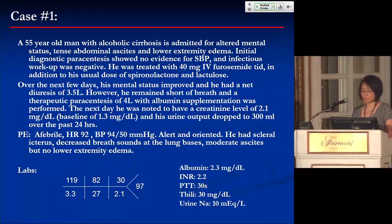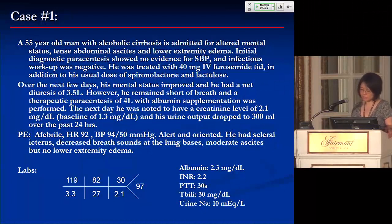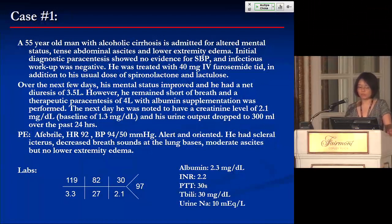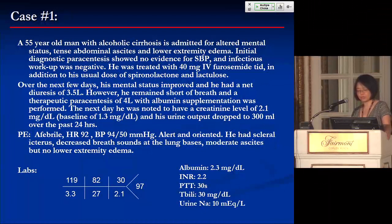He's alert and oriented, has scleral icterus, and decreased breath sounds at the lung bases, and moderate ascites but no lower extremity edema. Labs show sodium of 119, potassium of 3.3, chloride of 82, bicarb of 27, BUN of 30, creatinine of 2.1, albumin of 2.3, INR of 2.2, PTT of 30 seconds, T-bili of 30, and urine sodium of 10.